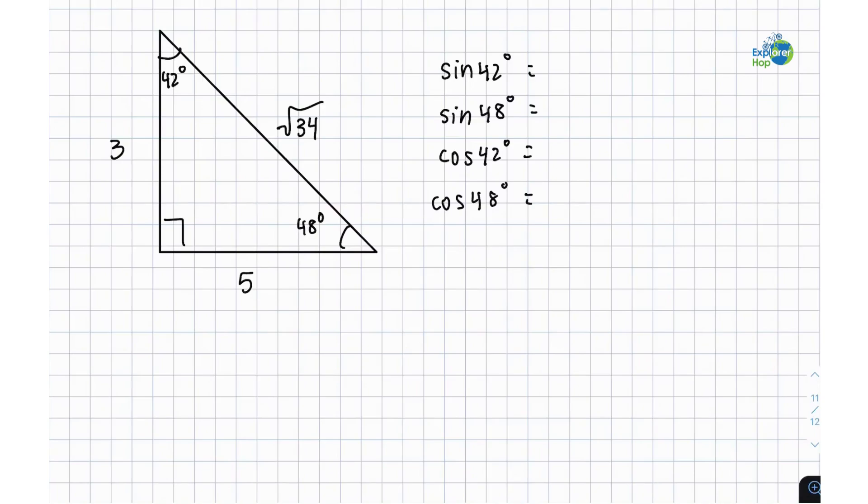Hello everybody and welcome to Explorer Hop. Today we have a right angle triangle in front of us with all of its interior angles and dimensions written down, and we're being asked to find sine and cosine of all the interior angles that are not 90 degrees.